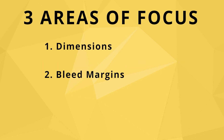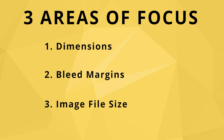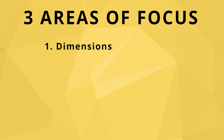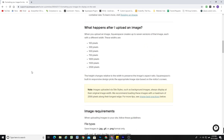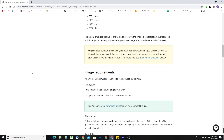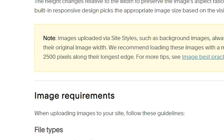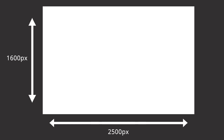We'll cover three areas of focus: image dimensions, bleed margins, and image file size. First, image dimensions. Squarespace's documentation suggests an image width of no more than 2500 pixels, so this is personally what I use for my banner images. I have found that an image height of 1600 pixels yields a nice rectangular aspect ratio, which helps to somewhat limit any extreme cropping on any one device.